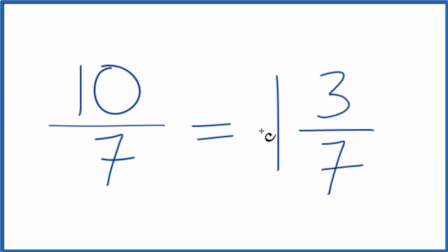You can check that too. 1 times 7, that's 7. 7 plus 3, that gives us the 10. We keep the denominator the same. But back to our original question,